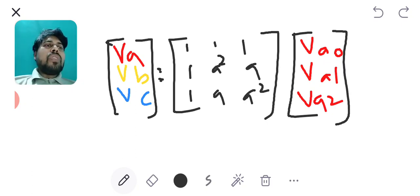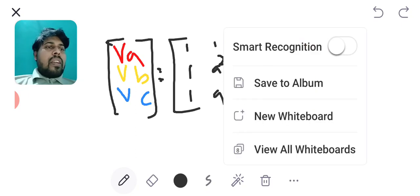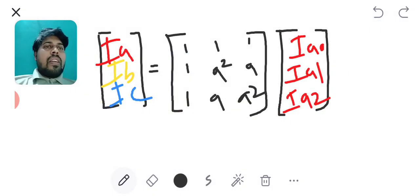Further I can extend this, I can write this expression in terms of unbalanced line currents also. So in place of V if I write I, I can write the expression for unbalanced line currents at the LHS side. Thank you.